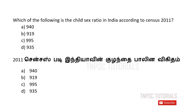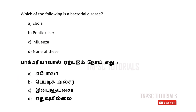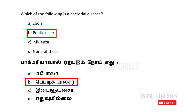A) 940. B) 919. C) 995. D) 935. The answer is B — 919. Ninth one: Which of the following is a bacterial disease? A) Ebola. B) Peptic ulcer. C) Influenza. D) None of these. The answer is B — peptic ulcer.